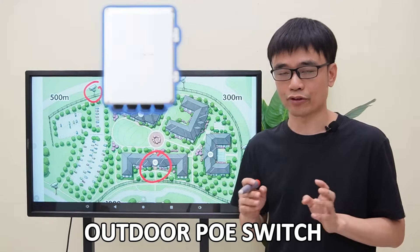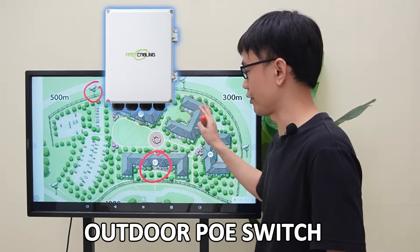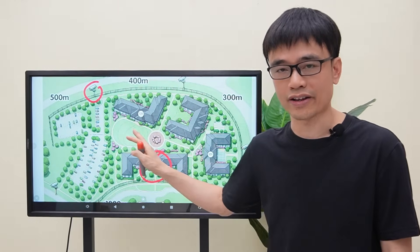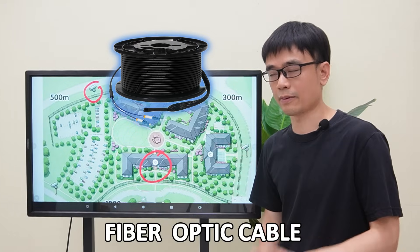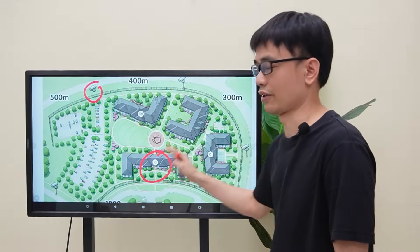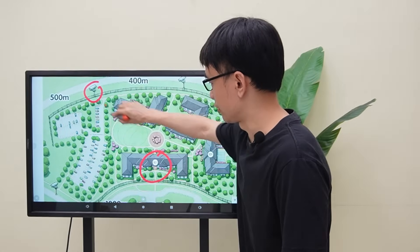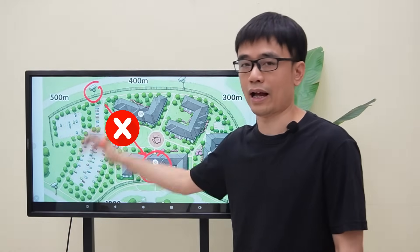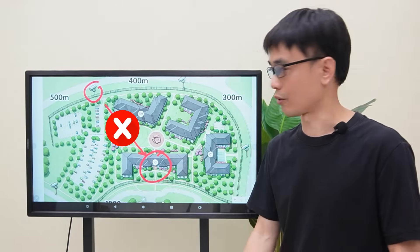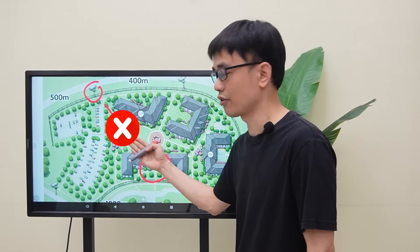The network video recorders are located in this control room. The plan is to install outdoor PoE switches in various locations, connect IP cameras nearby, and use fiber optic cable to link all the PoE switches to the control room. However, they don't want to run fiber optic cable directly to the control room from each outdoor PoE switch, as it would damage the surface construction.